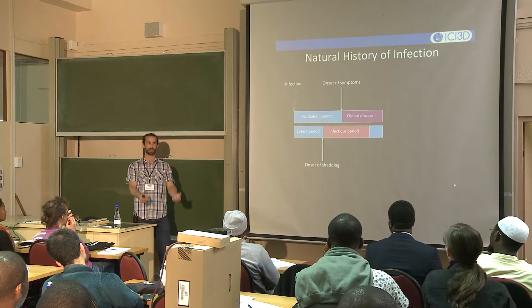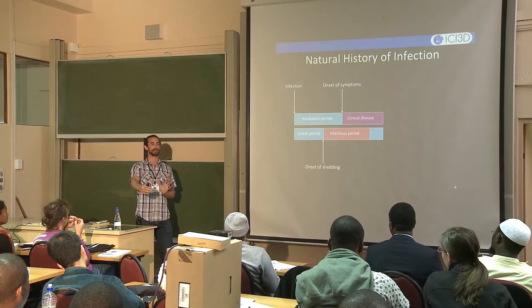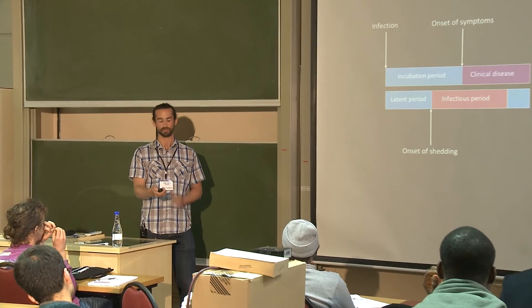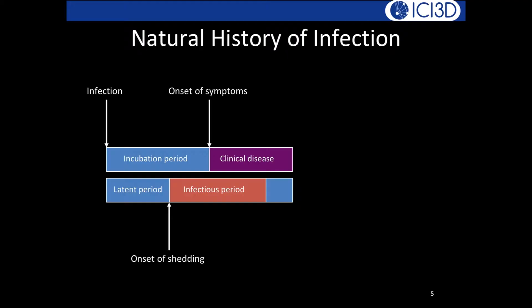If people are infectious before they're sick, they don't know they're spreading disease, making it difficult to control — like HIV. However, when you get sick and then become infectious right after, it's easier to control. Ebola is an example where you are not infectious until you're very sick. We'll focus on a specific subset: acute immunizing infections.